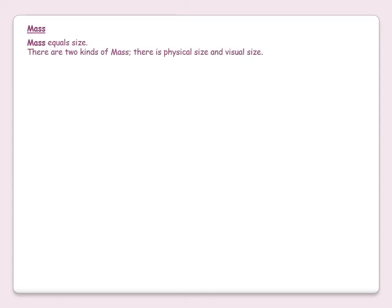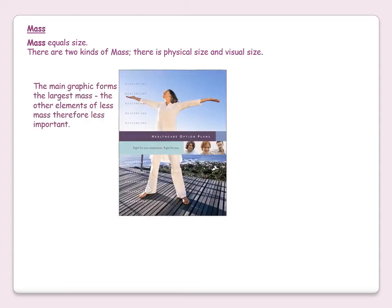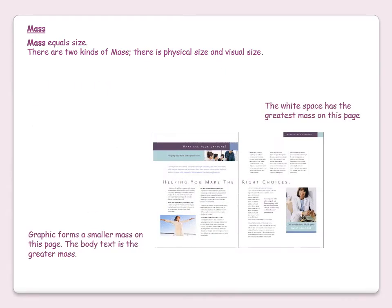Mass equals size. There are two kinds of mass: physical size and visual size. The main graphic forms the largest mass — the other elements with less mass are therefore less important. White space can be the greatest mass on a page. A graphic may form a smaller mass while the body text is the greater mass.